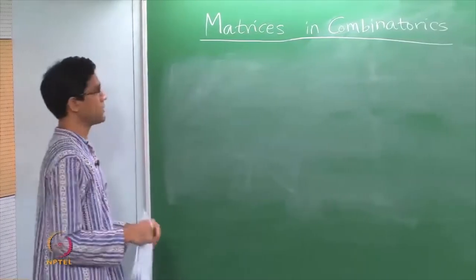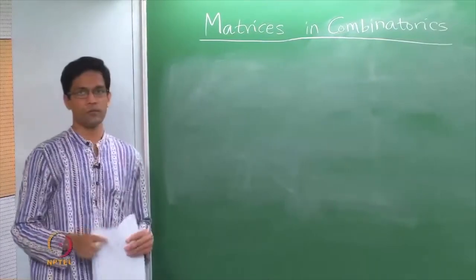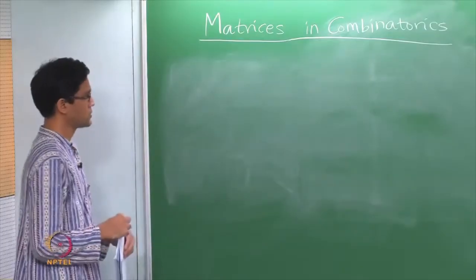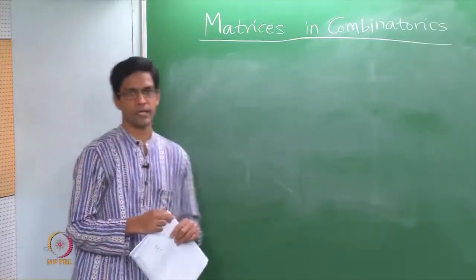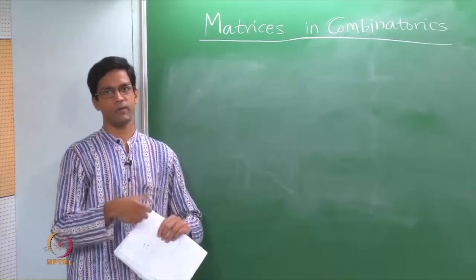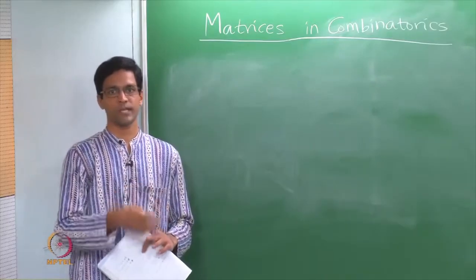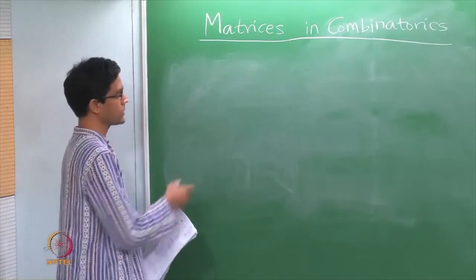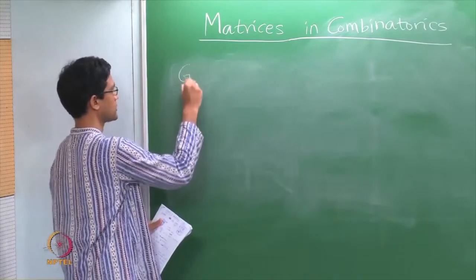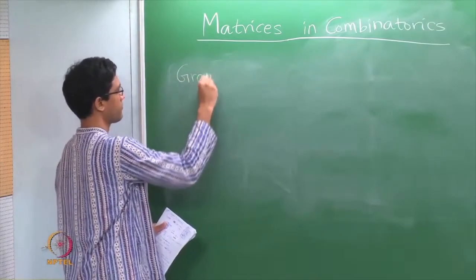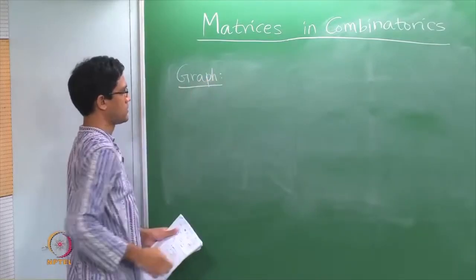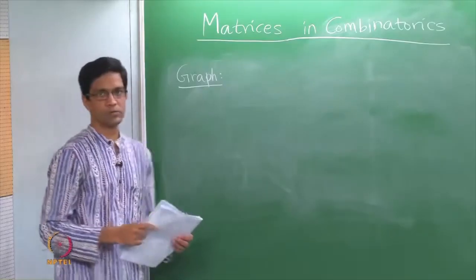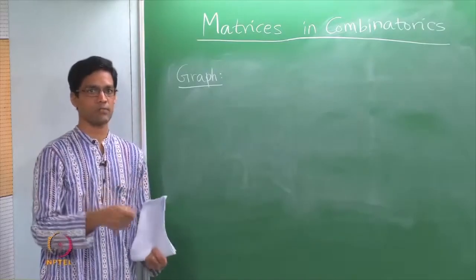This time we will talk about matrices as applied to combinatorics. Recall combinatorics is really the study of counting discrete structures. What we want to do now is to talk about one such discrete structure which is the notion of a graph. This use of the word graph is different from the usual use of the word graph in the context of functions.